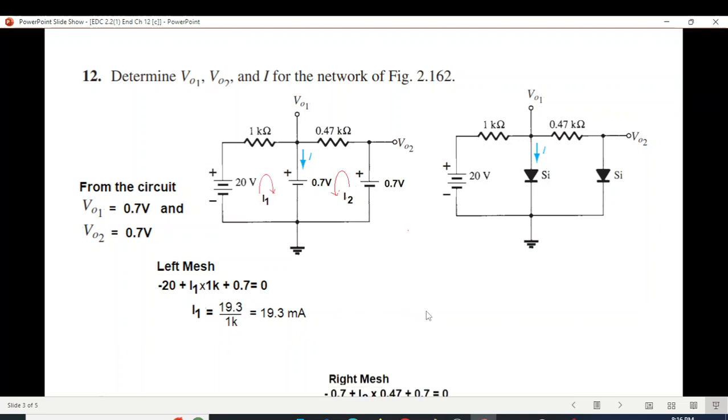And for I2, right mesh from here we go 0.7 plus I2 into 0.47 and 0.7 here. So I2 is 0. Now I is I1 plus I2. So adding the two, I is also 19.3 milliampere.